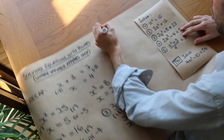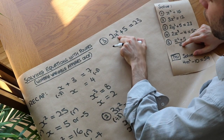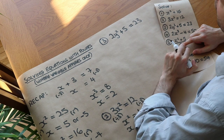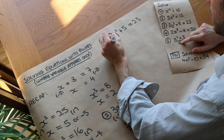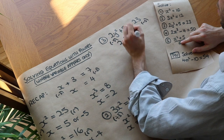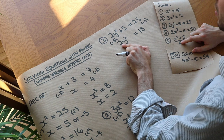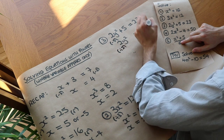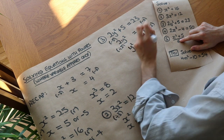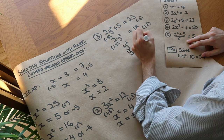Question 3: 2y squared plus 5 equals 23. Thinking about the story of y — it gets squared, then multiplied by 2, then 5 is added. We undo the last step first: subtract 5 from both sides, giving 2y squared equals 18. Then divide both sides by 2, giving y squared equals 9. Finally, square root both sides: y equals plus or minus 3.